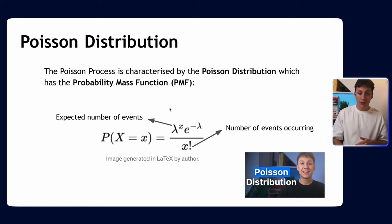This is the Poisson PMF. We have lambda, which is the expected number of events happening, and x, which is the number of events occurring we want to work out the probability for. Here e is Euler's number as normal, and x is the random variable which is Poisson distributed. I've got a video linked on the screen that describes the Poisson distribution in more detail.